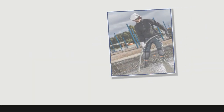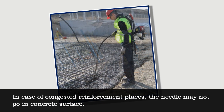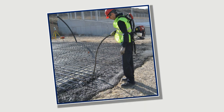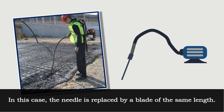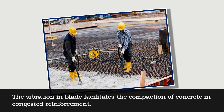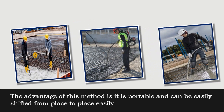In case of mass concrete structures, bigger needle type vibrators are used. In case of congested reinforcement, the needle may not go into the concrete surface; in this case, the needle is replaced by a blade of the same length. The vibration in the blade facilitates the compaction of concrete in congested reinforcement.